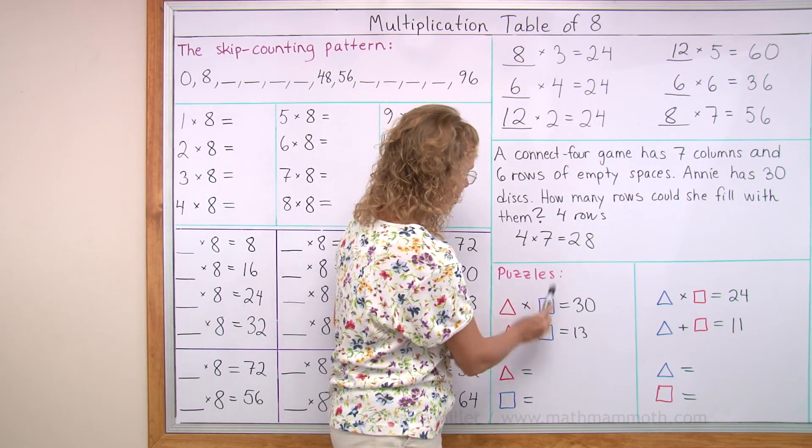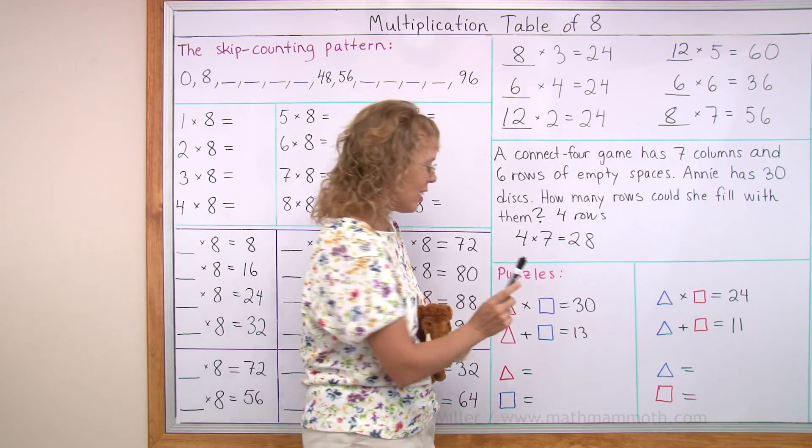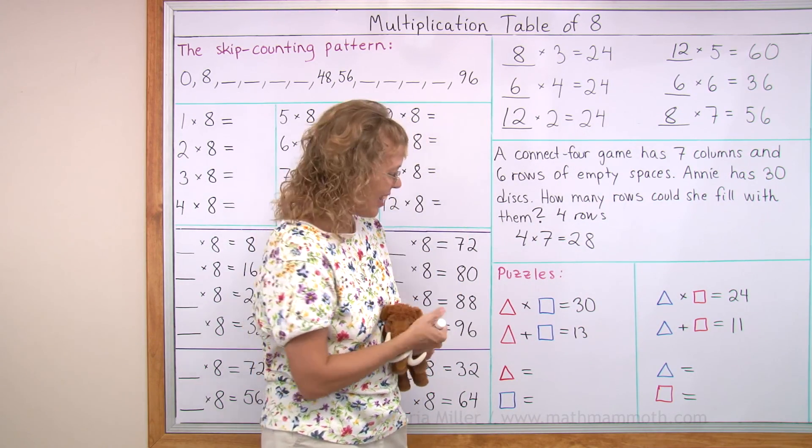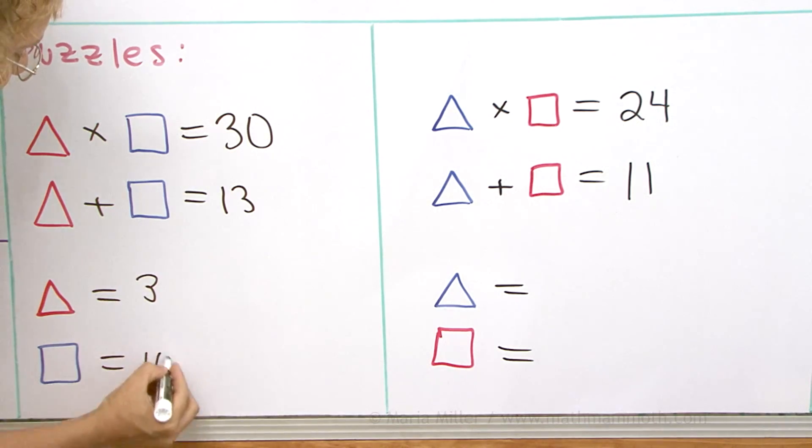So what else could you multiply? Two numbers. They give you 30. You add them, you get 13. Okay, I'll tell you, it is 3 and 10. Right?